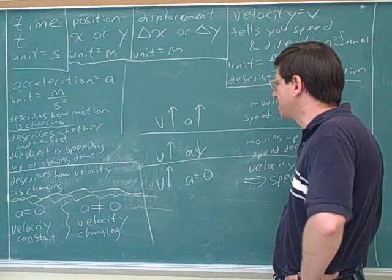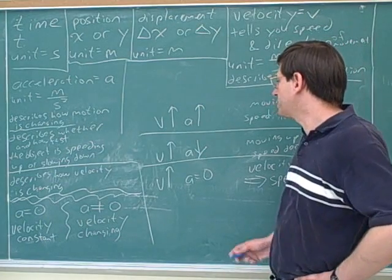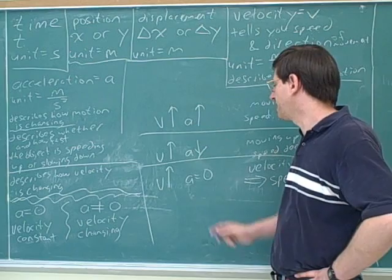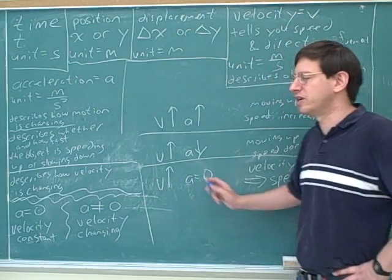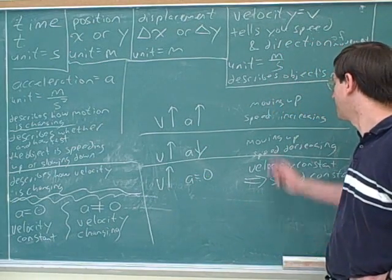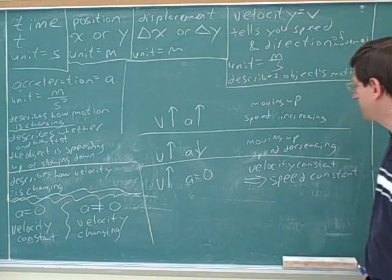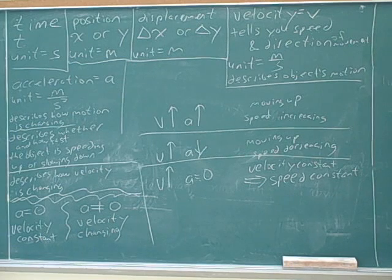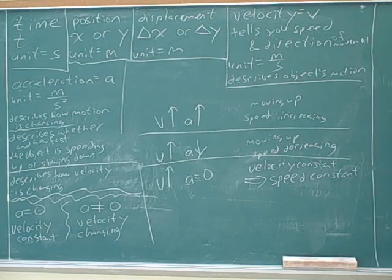There are three different possible possibilities. The acceleration can be parallel to the velocity, anti-parallel to the velocity, or the acceleration could be zero. For one-dimensional motion, those correspond to speed increasing, speed decreasing, or speed constant. We might have to modify some of these ideas for two-dimensional motion, but we're making a good start at understanding the basic concepts.